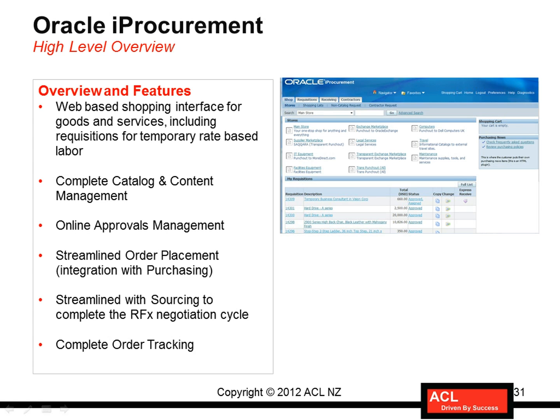Online Approval Management: you can define an approval hierarchy and integrate with Oracle Approvals Management to define complex approvals. It could be serial approvals or parallel approvals. That can be defined as well as tracked through Oracle i-Procurement. The tracking part is in Oracle i-Procurement, but the definition of approvals and hierarchy is done in Oracle Purchasing, and the integration for that approval is done in Oracle Approvals Management.